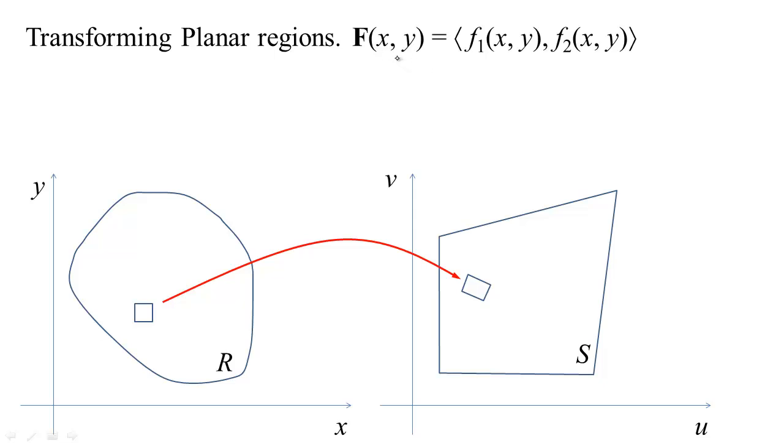So when we have a transformation of the plane, we have a function with two inputs and two outputs. Here I'm thinking about the first output as having the name u and the second output as having the name v. Our first question is if you have some region in the xy plane, this transformation is going to turn that into another region and how do you find that region?